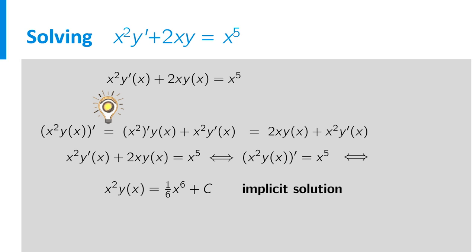This gives us the implicit solution. And if we divide by x squared, we find the explicit solution y equals 1 over 6 x to the fourth plus c over x squared.